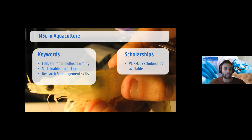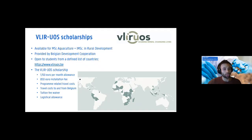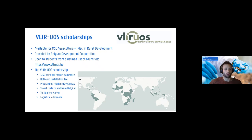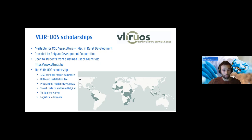For the Aquaculture program, there are full VLIR-UOS scholarships available. These are scholarships awarded by the Belgian Development Cooperation for a defined list of countries from Latin America, Africa, and Asia. They cover tuition fees, a monthly allowance, and travel costs to Belgium. For more information on eligible countries, visit their website.